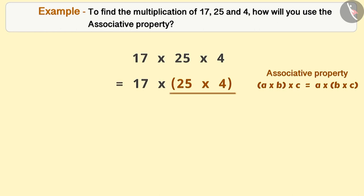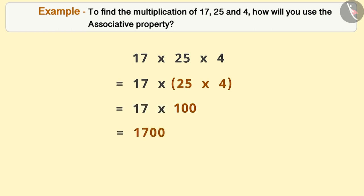It will be easier to solve by making groups like this. Here, the product of 25 and 4 will be 100, and 17 multiplied by 100 equals 1700.